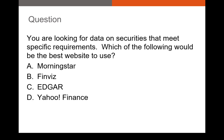Here's a good practice question: You're looking for data on securities that meet specific requirements — which of the following would be the best website to use? Morningstar, Finviz, Edgar, or Yahoo Finance? The correct answer here is going to be Finviz. If we're looking for securities that meet specific requirements, the best way to find those securities is to use a stock screener — screen based on price-to-earnings ratio, price-to-book ratio, or earnings per share over the last year. There is no better free screener than Finviz.